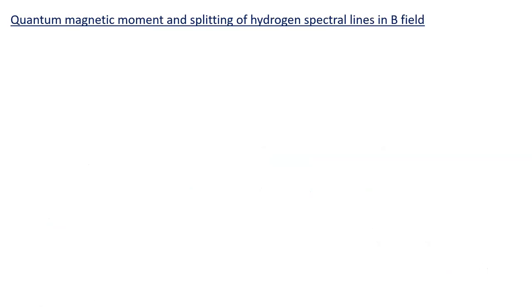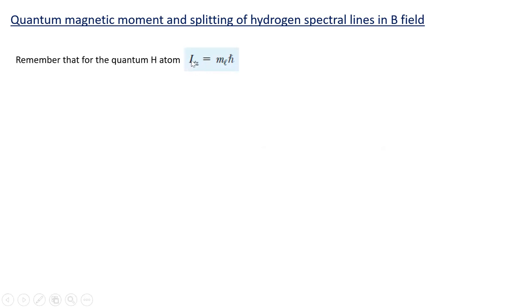However, we need to treat magnetic moments quantum mechanically because we're dealing with atoms — this will help explain the splitting of hydrogen spectral lines in a magnetic field that Zeeman observed. Remember that for the quantum hydrogen atom we have three quantum numbers: n, l, and m_l. m_l influences the z-component of angular momentum: L_z = m_l × ℏ. With a magnetic field applied in a given direction, we'll call that the z-axis.